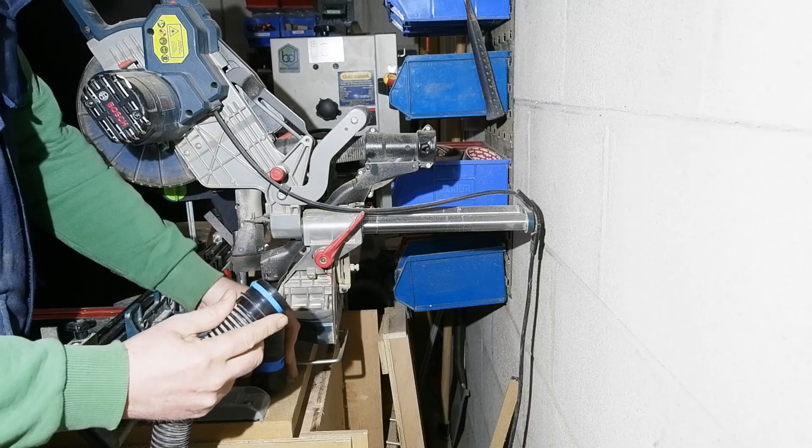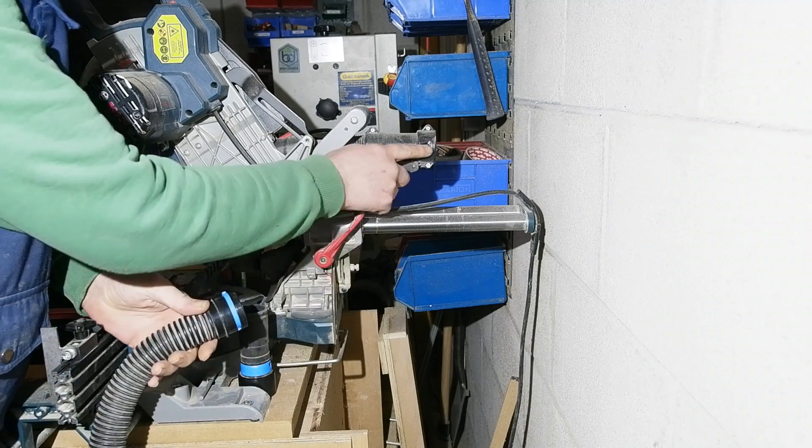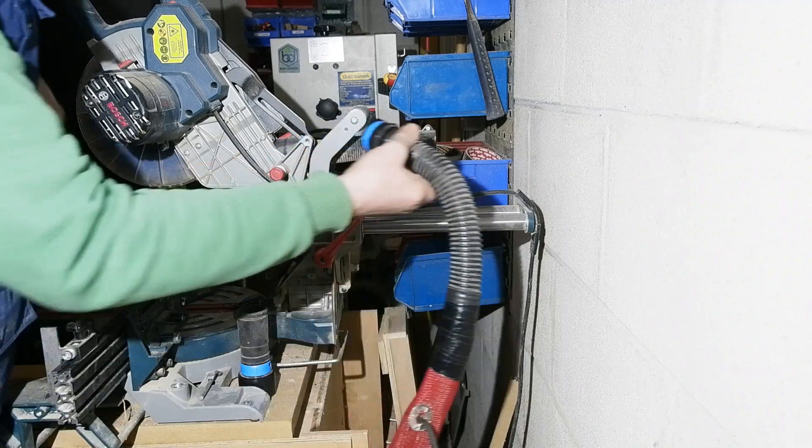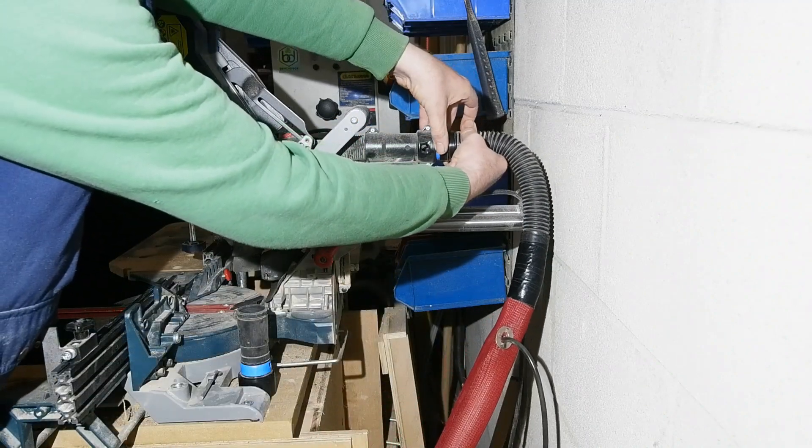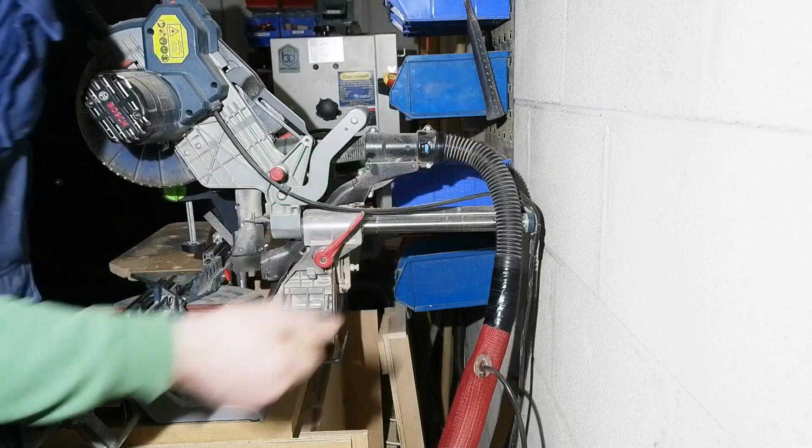As mentioned earlier, Bosch use an almost identical system as Centec on their hoses and, as such, the Centec will clip straight into the back of the Bosch mitre saw, no adapter needed. Saves a bit of room around the back too, which is nice.